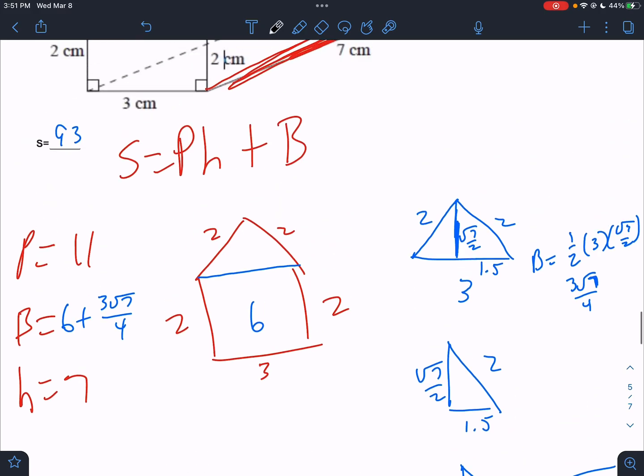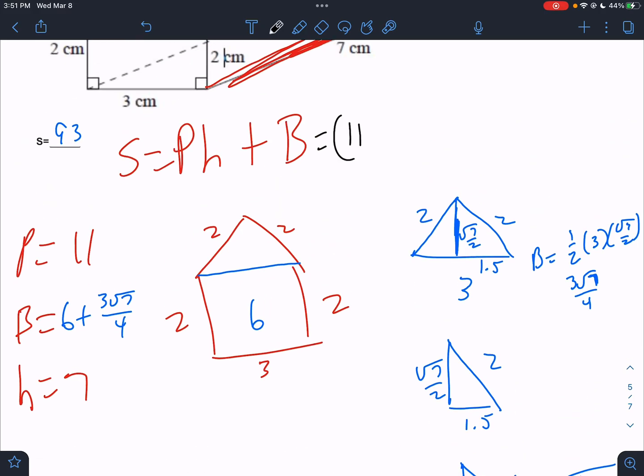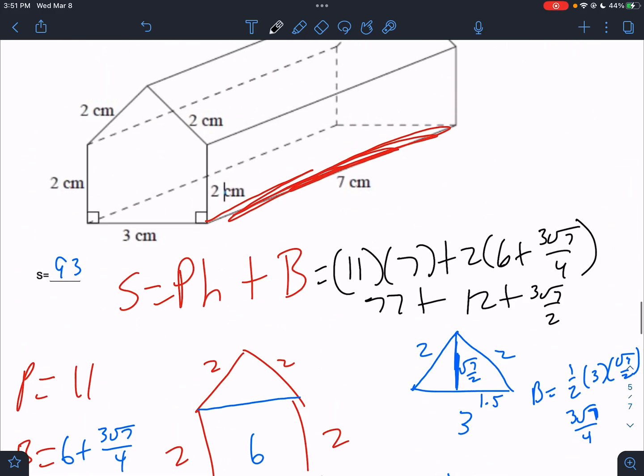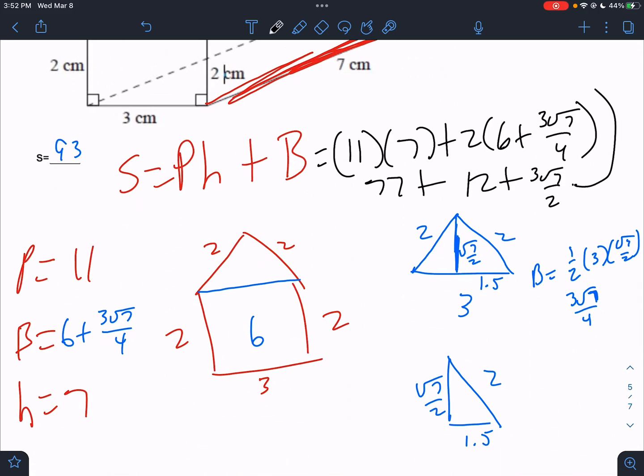And then we tie all that together. We plug it into the formula. pH would be 11 times 7 plus 2B would be 2 times 6 plus 3 root 7 over 4. It would be 77 plus 12 plus 3 root 7 over 2. So 77 plus 12. I mean, you could type this in because they didn't tell us to round, right? They said round to the nearest whole number. But just to finish the job, 77, 87 would be 89 plus 3 root 7 over 2. Plug it in. Then I'll make sure I got the right answer. 89 plus 3 root 7 over 2. And I get 93. Yep.